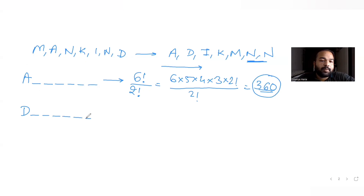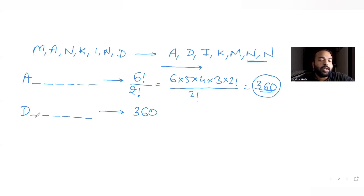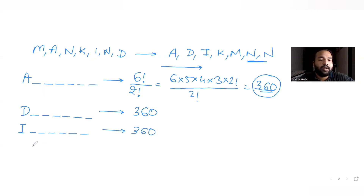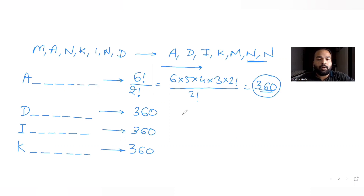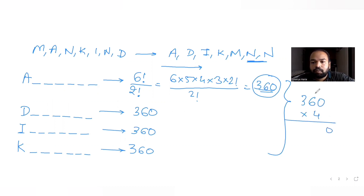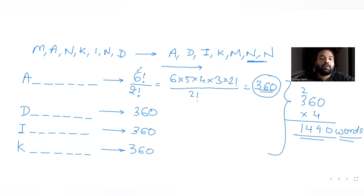Similarly, words starting with D give 360 words, words starting with I give 360 words, and words starting with K give 360 words. So in total, 360 × 4 = 1440 words appear before any word starting with M.